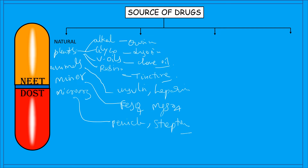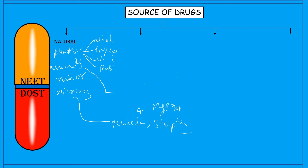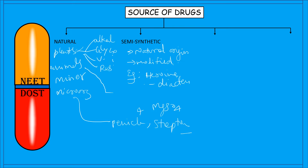Drugs obtained from microorganisms include penicillin and streptomycin. The next source is semi-synthetic drugs, where the origin is natural but they are chemically modified to acquire a desired product. The best example is heroin, which is obtained by diacetylation of morphine — morphine is obtained naturally from a plant and then modified to produce heroin.